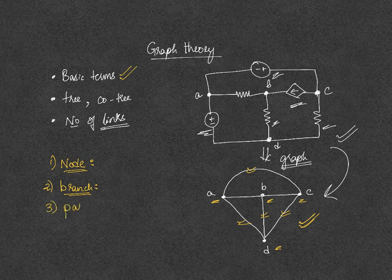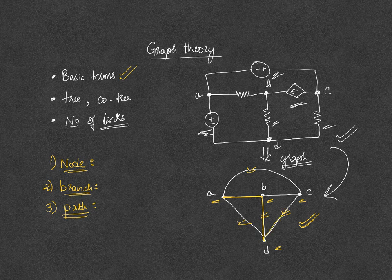Next we have a path. A path is any set of elements that may be traversed without passing through the same node twice. For example, from A to B, you are travelling from A to B, then from B to D, and from D to C. So A, B, D, C will become a path.